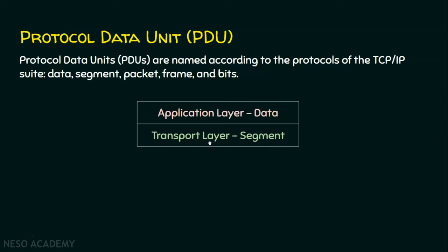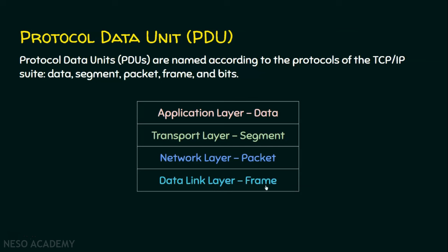After adding transport layer information, we add the network layer header. Once the network layer header is added, we call that a packet — the network layer PDU is called a packet. Then we add the data link layer header and trailer to the packet, and that data link layer PDU is called a frame. Finally, these frames are converted into zeros and ones in the physical layer — the physical layer PDU is called bits.